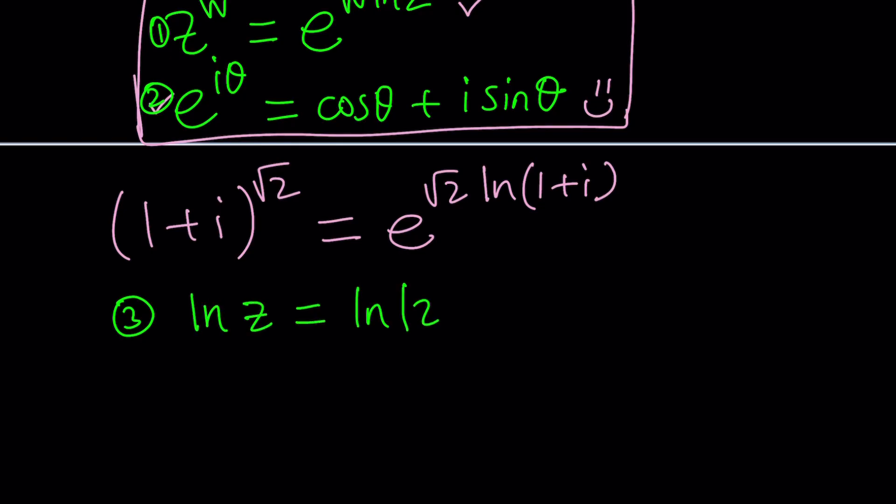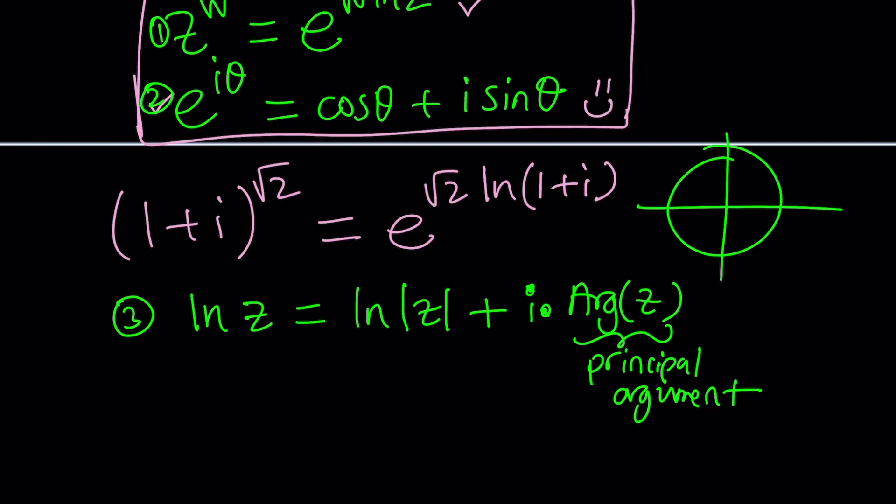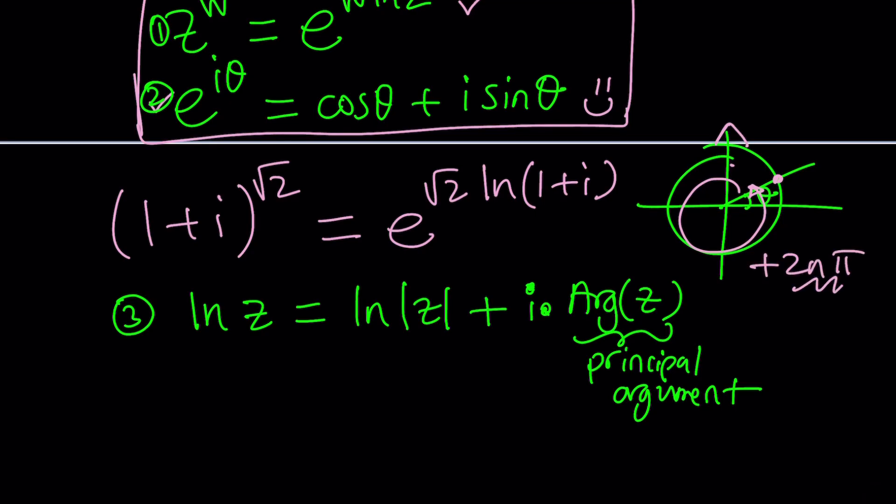That is ln absolute value of Z plus i times the argument of Z. By the way, I wrote argument with a capital A, which means this is the principal argument. Okay? Or the principal value of the argument. If you write it lowercase, I guess it could be anything. Meaning that we can add multiples of 2 pi. Because what happens is, let's say your theta is here, and I can just go ahead and add 2 pi to it. It's going to bring me to the exact same point. I can add 2 pi. I can subtract 2 pi. Always go with multiples of 2 pi. You'll get to the same point. So we express that as plus 2n pi. So this is kind of like a zero in some way, because 2 pi is zero. Kind of, right?